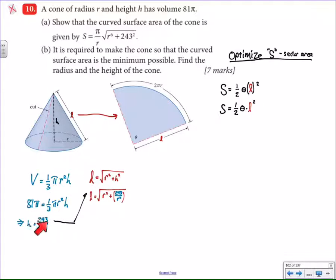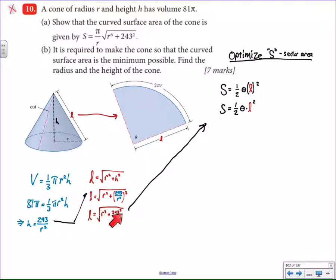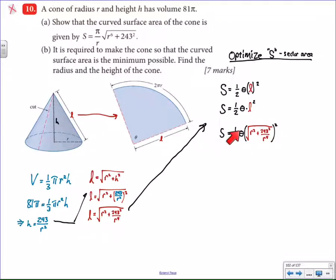There I substituted the height in — and that of course has to be squared — and therefore when I clean it up a little bit, I get the slant height L in terms of r, the radius. So that I can put into my original sector area equation. As you can see, we still have a problem: theta is not written in terms of r yet. I have the slant height in terms of r, but I still need to get theta in terms of r.